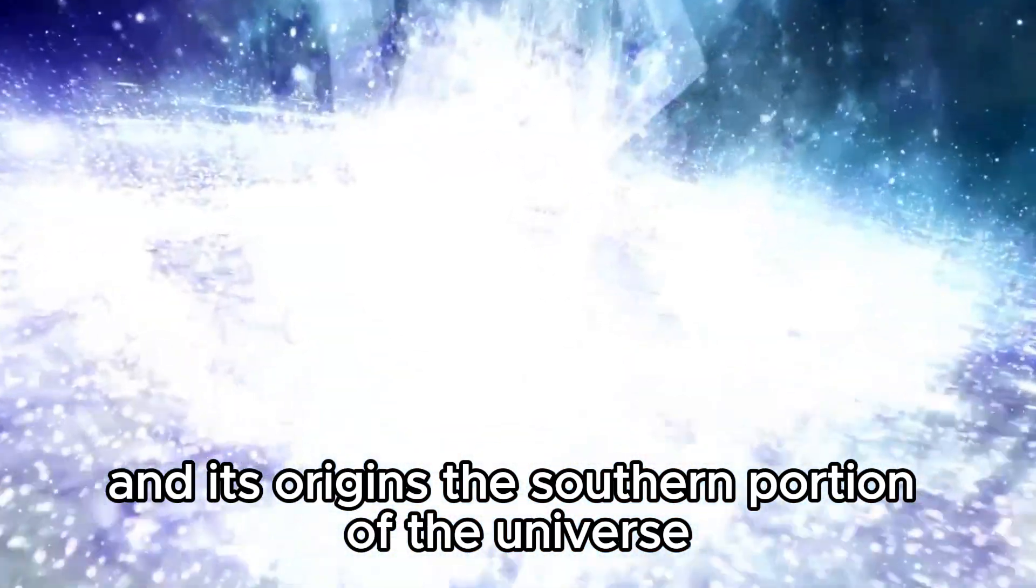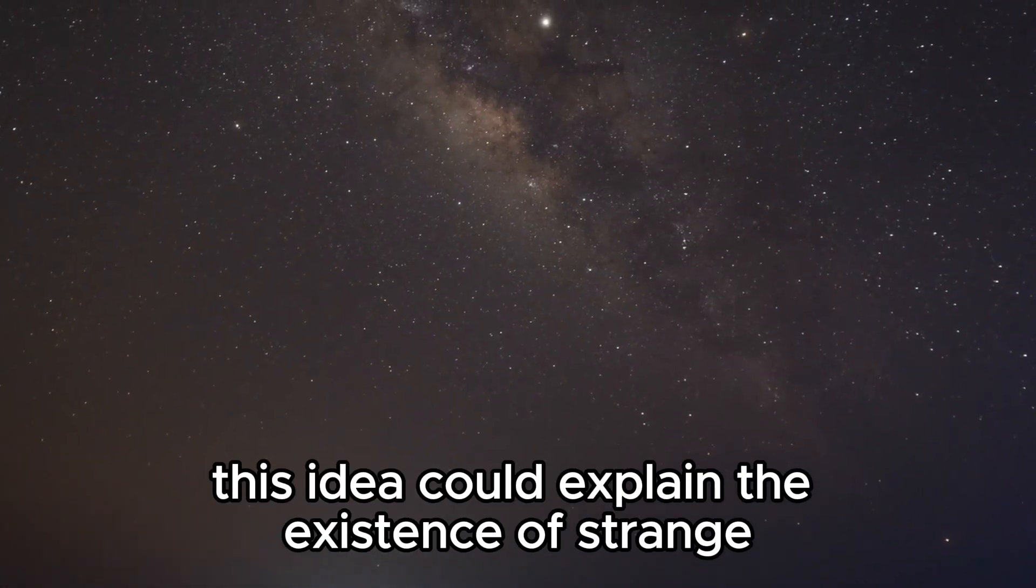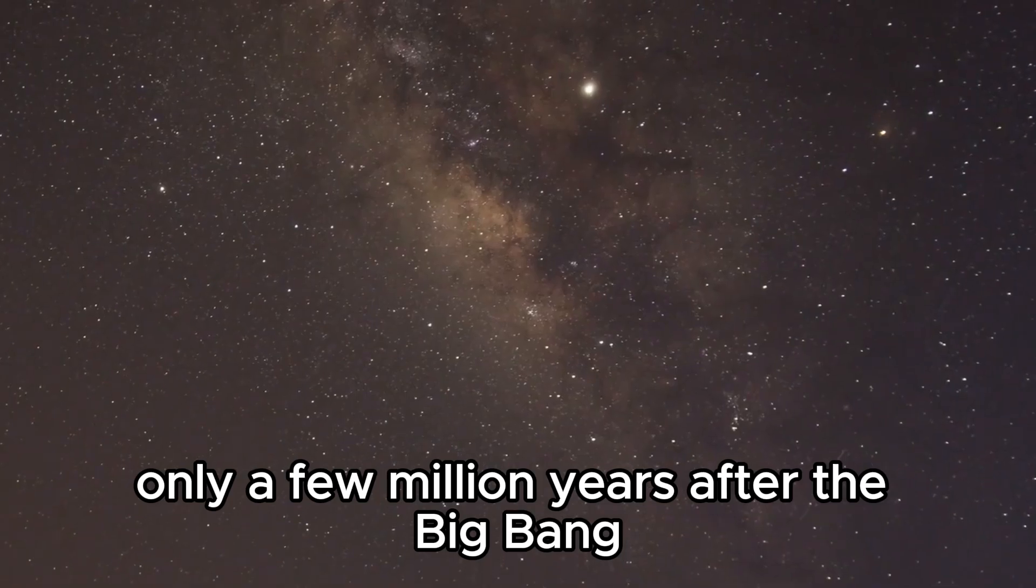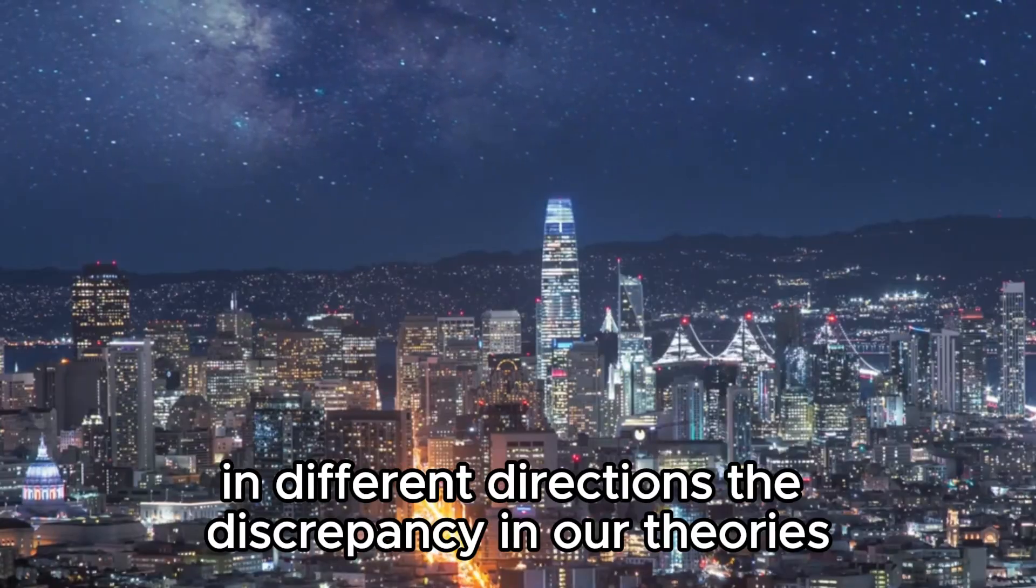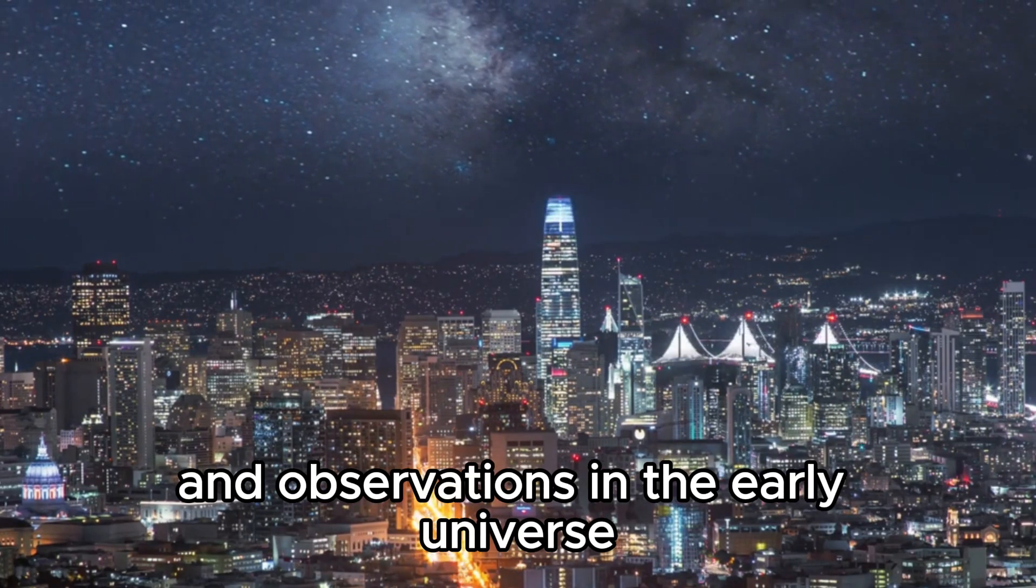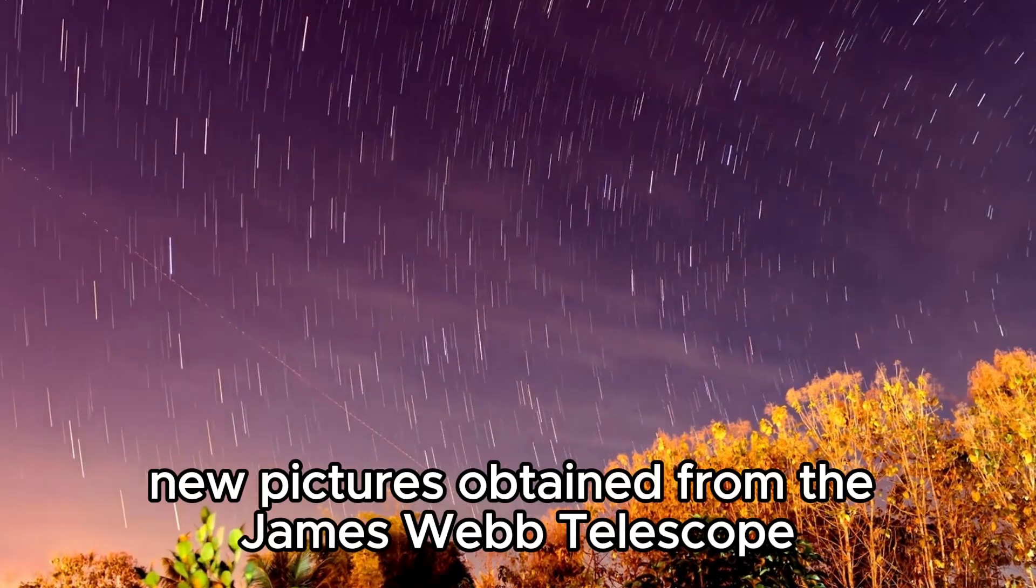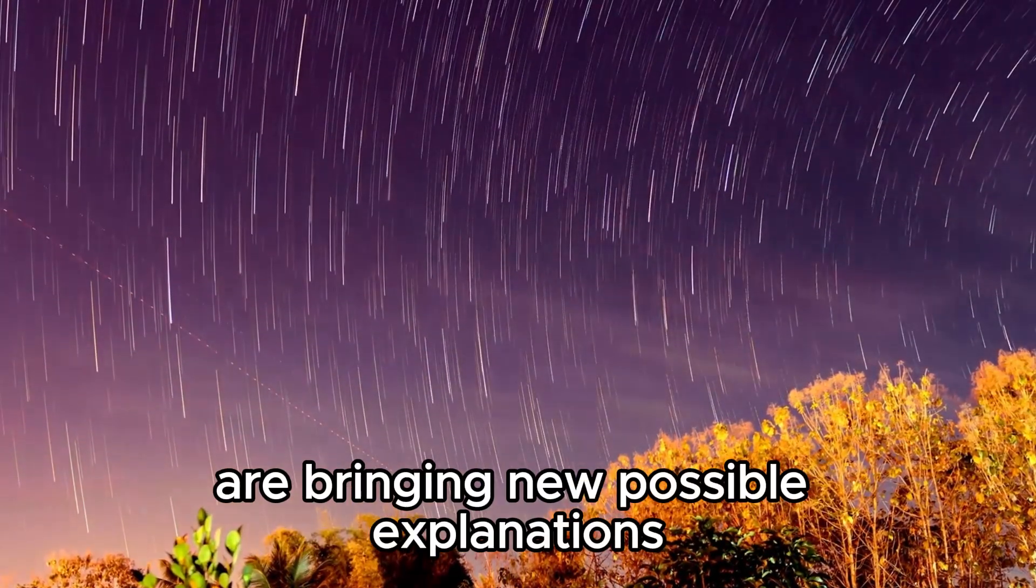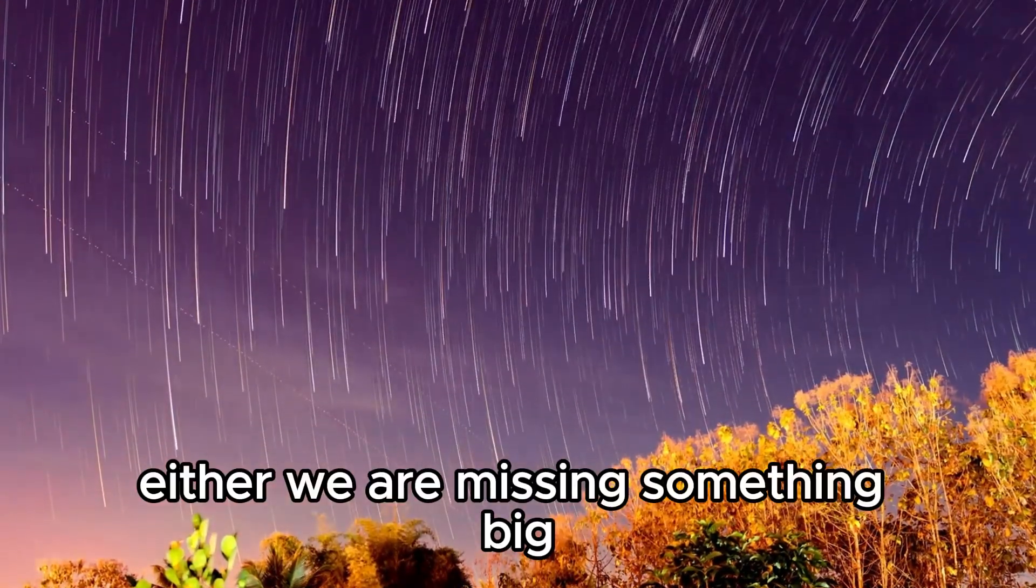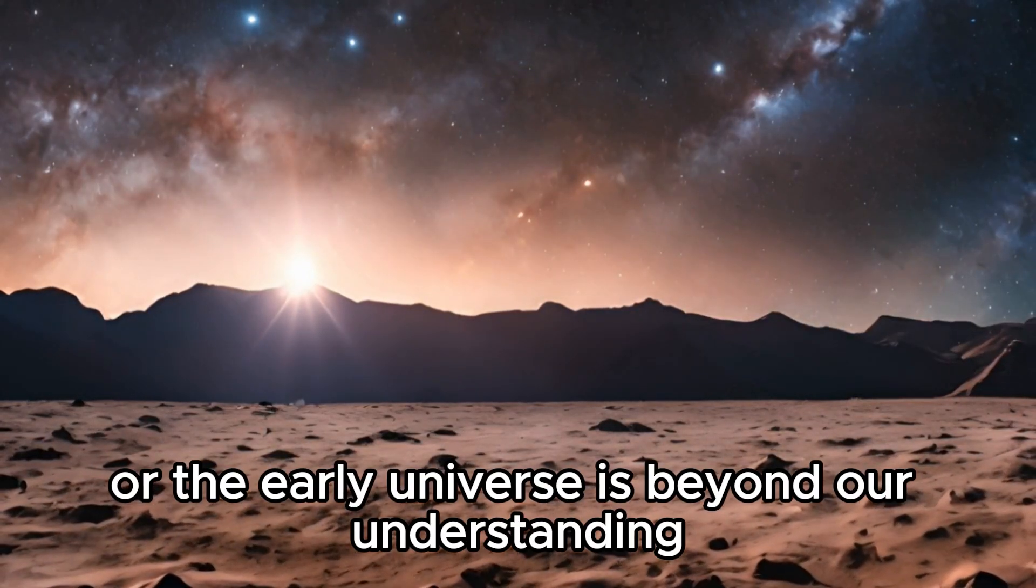The southern portion of the universe might be bound by a different set of physical laws than the northern side. This idea could explain the existence of strange and massive galaxies only a few million years after the Big Bang, as well as why the universe is different in different directions. The discrepancy in our theories and observations in the early universe is now revealing many hidden mysteries of our universe. New pictures obtained from the James Webb telescope are bringing new possible explanations about the existence of our universe. Either we are missing something big in our current understanding of the universe, or the early universe is beyond our understanding.